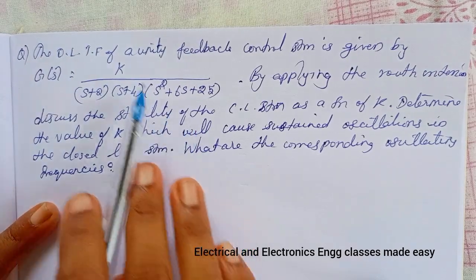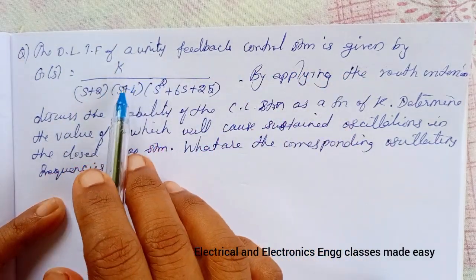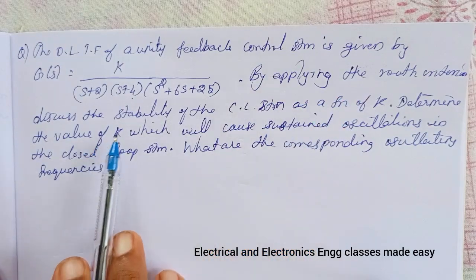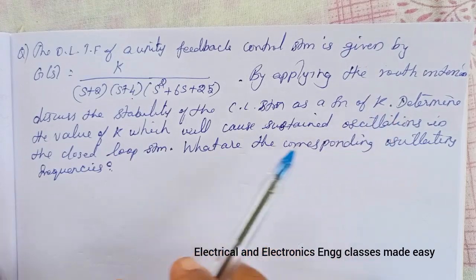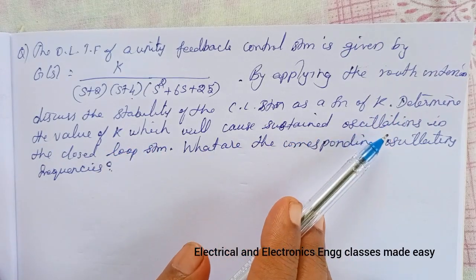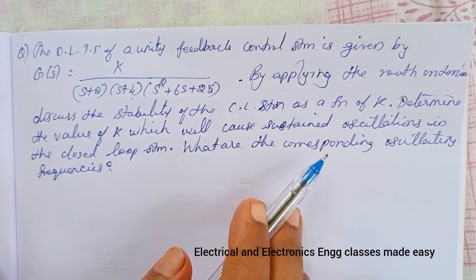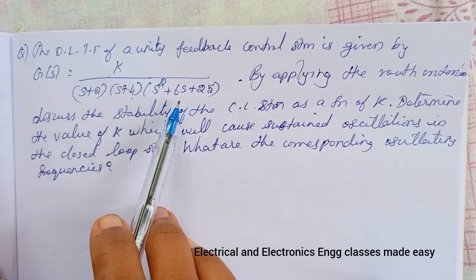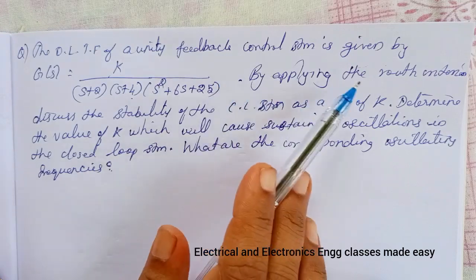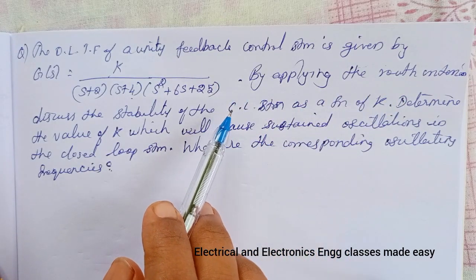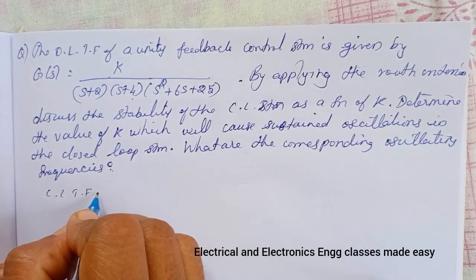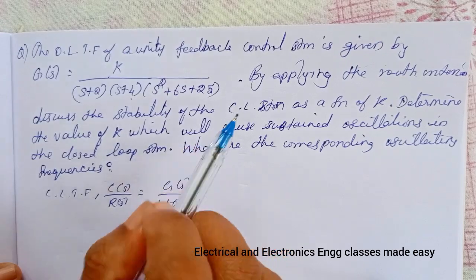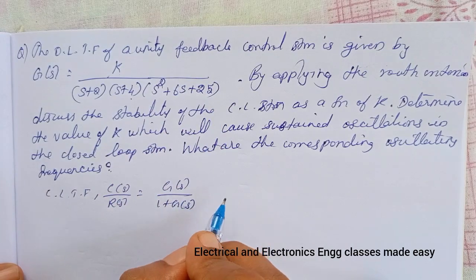Let us do another problem. The open loop transfer function of a unity feedback control system is G(s) = K / [(s+2)(s+4)(s²+6s+25)]. By applying the Routh criterion, discuss the stability of the closed loop system as a function of K, determine the value of K which will cause sustained oscillations, and find the corresponding oscillating frequency.